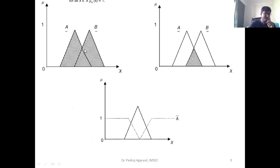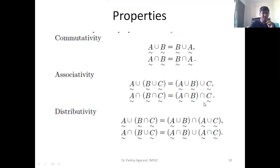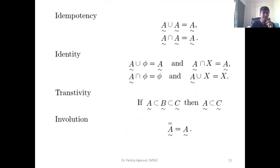Union is represented as the maximum value between both sets, shown graphically. This is the representation of intersection, and this is the representation of the complement of set A. All the properties of fuzzy sets — commutativity, associativity — all those properties we normally learn for classical sets are applicable to fuzzy sets as well.